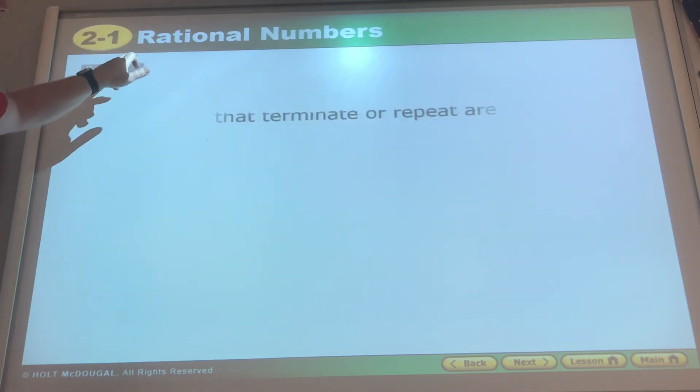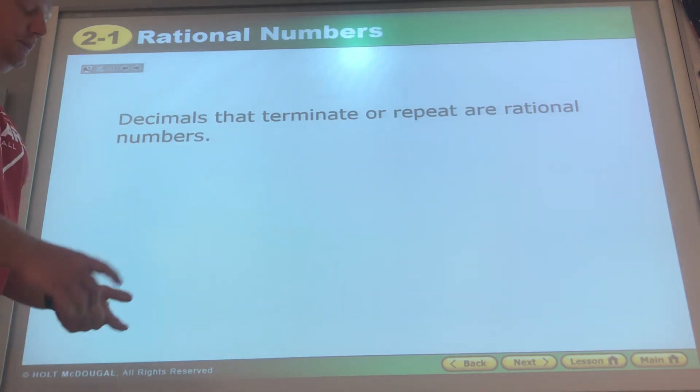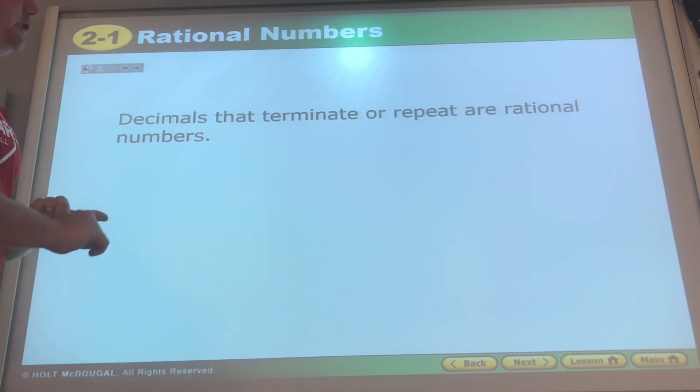We look at that, those are equal to one another. Decimals that terminate or repeat are rational numbers, so rational numbers means they can be represented as a fraction or a decimal that ends or repeats.